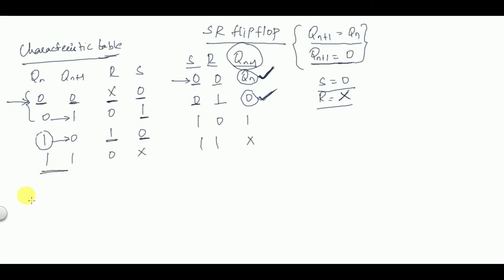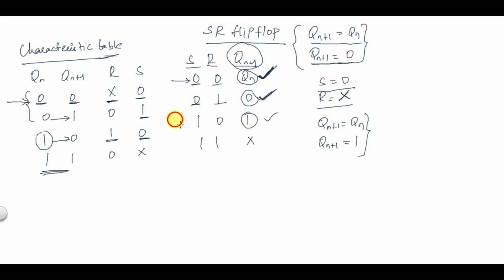For the fourth case where QN=1 and QN+1=1: QN+1=QN and QN+1=1 are satisfied by the first and third rows of the truth table. In those rows, S is changing from 0 to 1, so S is a don't care condition, while R is unchanged at 0. That is what we have written in the characteristic table.